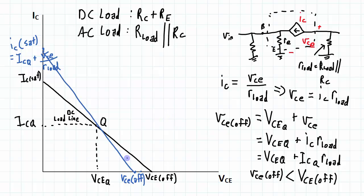All right, I've drawn the AC load line here approximately — it should pass through the Q point but I didn't quite hit it. So the swing for the AC load line is from VCE off all the way up to IC sat.